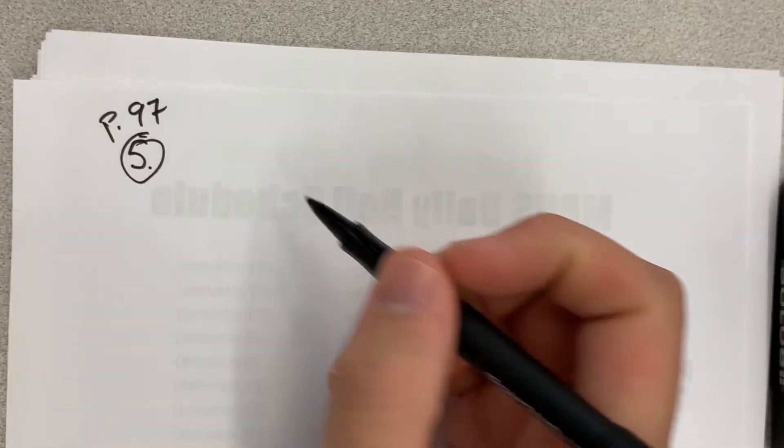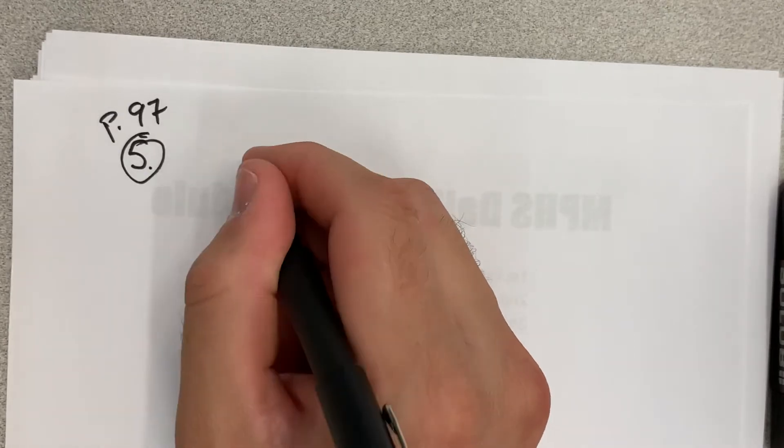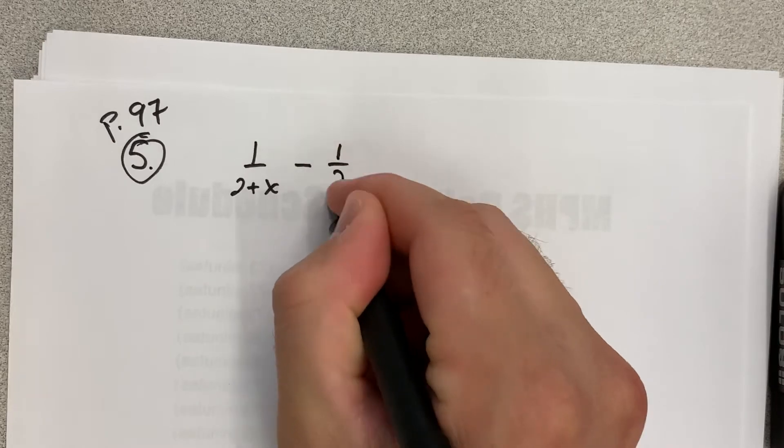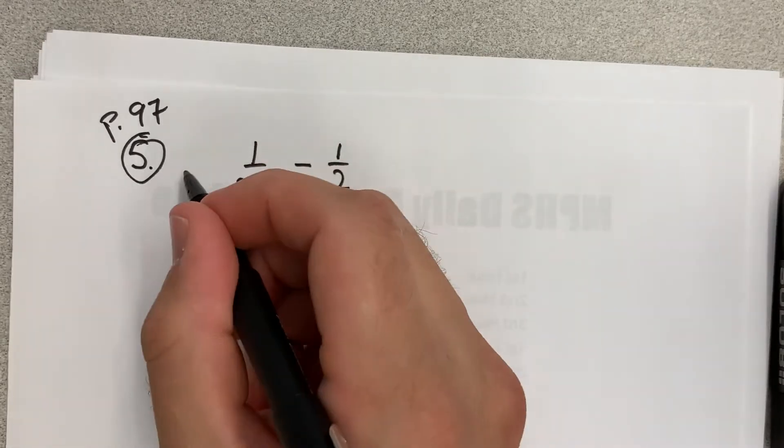Okay, so what is the problem? It's like 1 divided by 2 plus x minus 1 half, all divided by x. And am I looking at 0? Limit as x goes to 0?